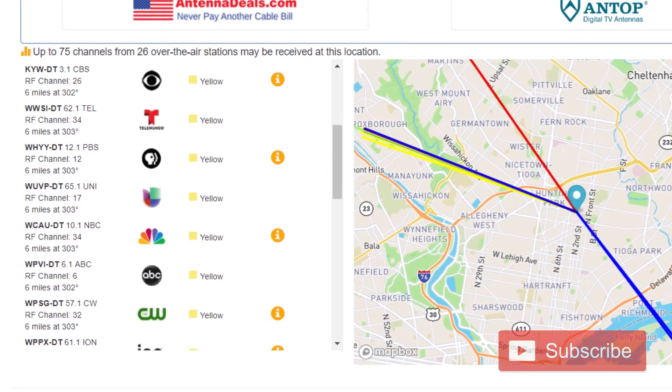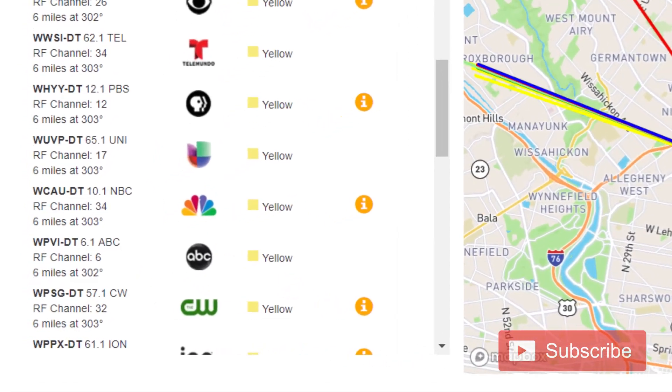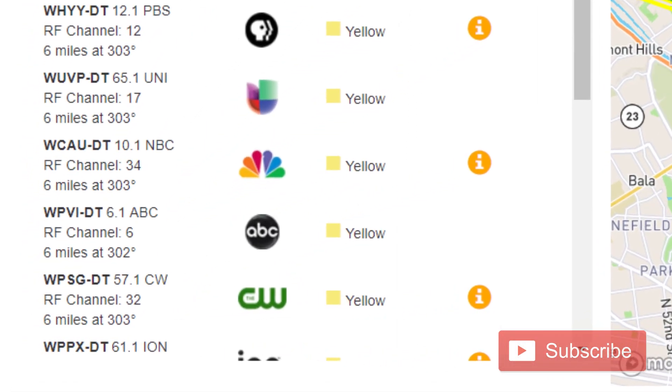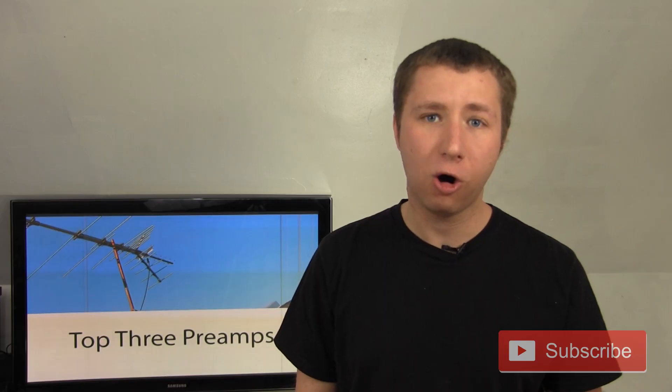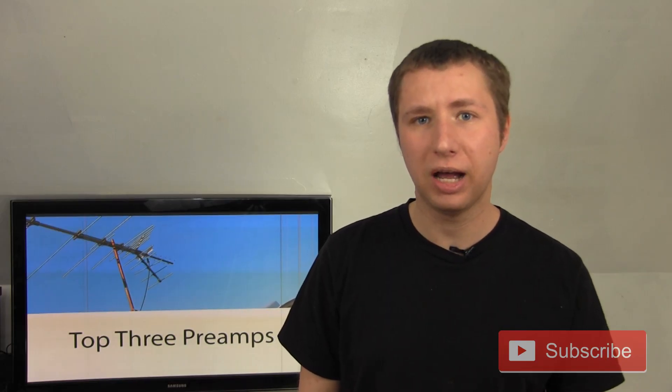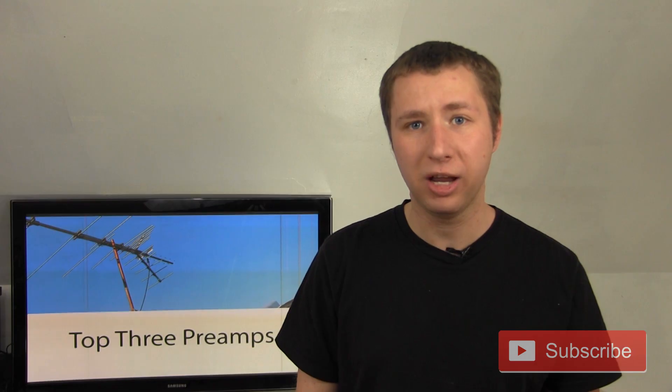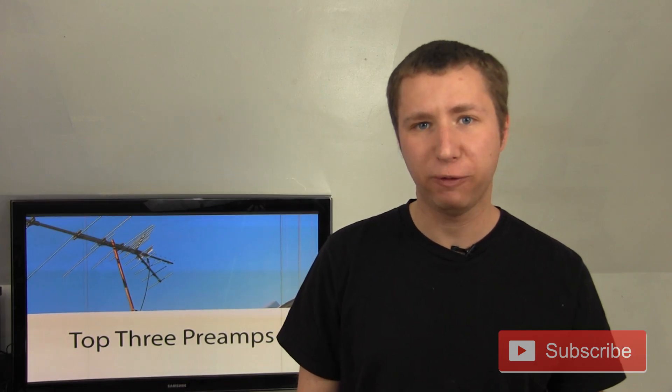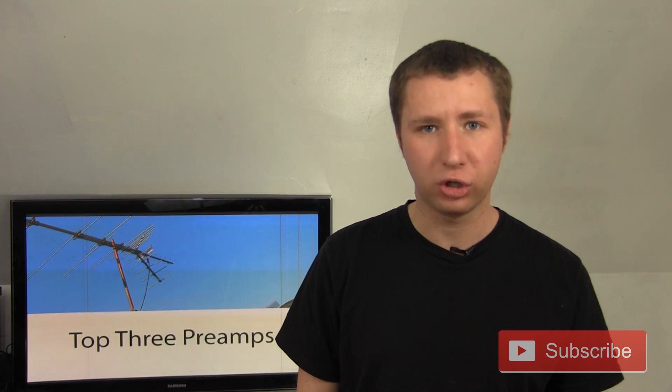However, if on antennaweb.org, you see most if not all your stations have the yellow color or the green color, that means they are already really strong. And not only do you not need a preamp to watch them reliably, if you install a preamp and it amplifies a strong signal too much, it can overload and not show the channel at all.